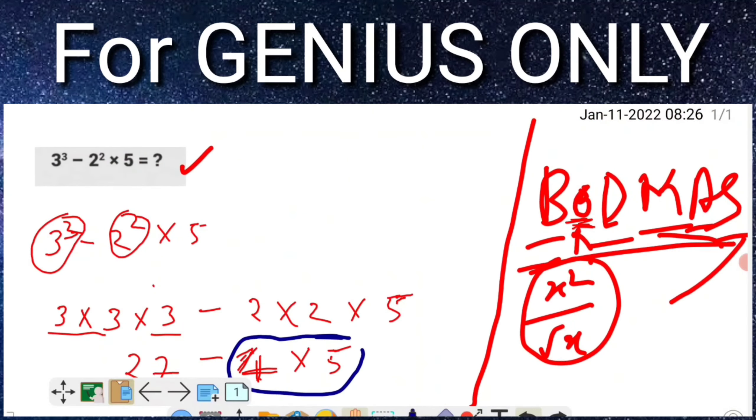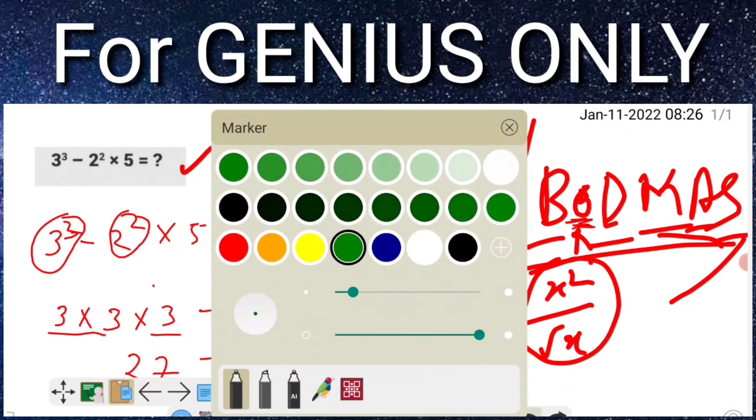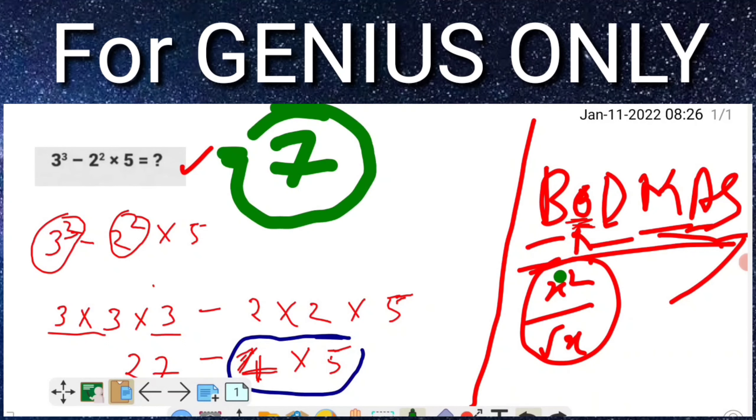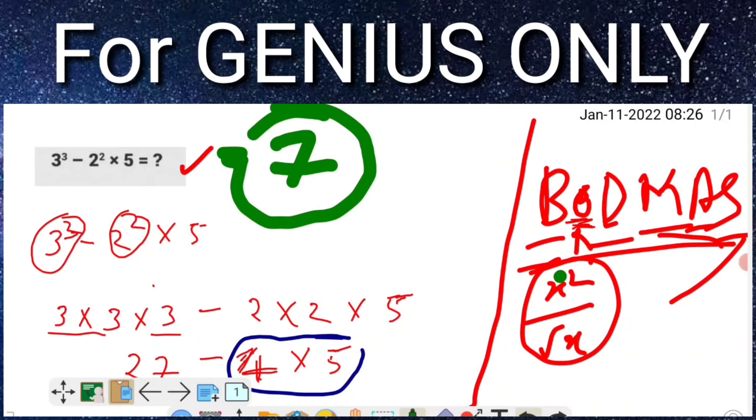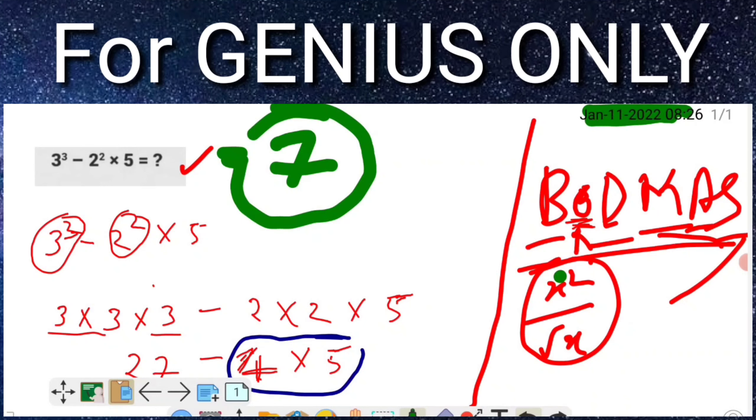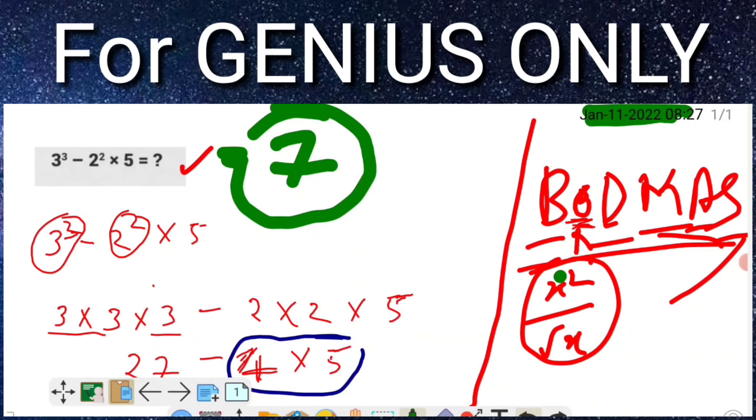And what is the answer of this question? 7. The answer of this question is 7. I hope you understand - if you follow the BODMAS rule you will get the exact answer of this question, and the answer is 7.